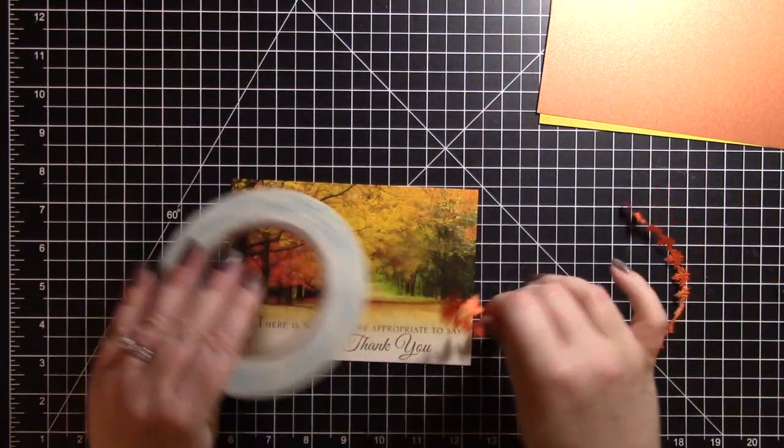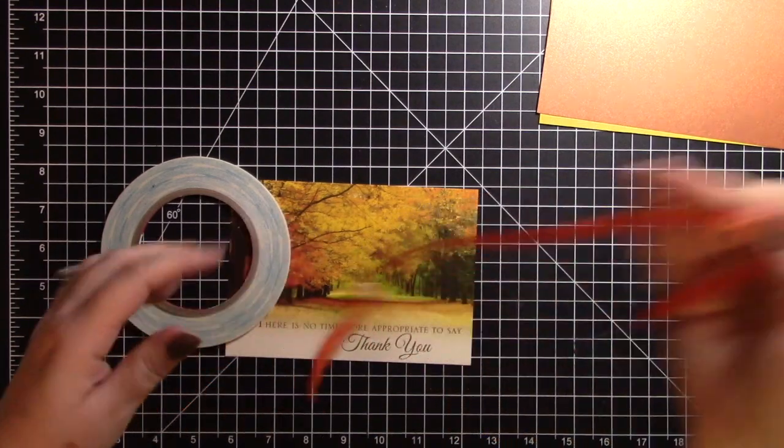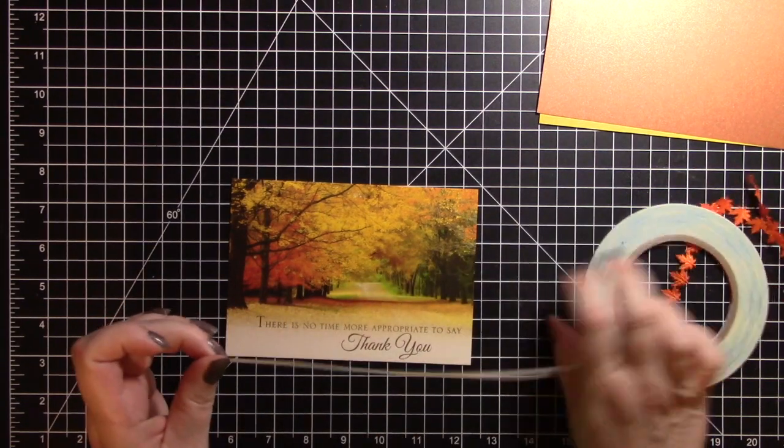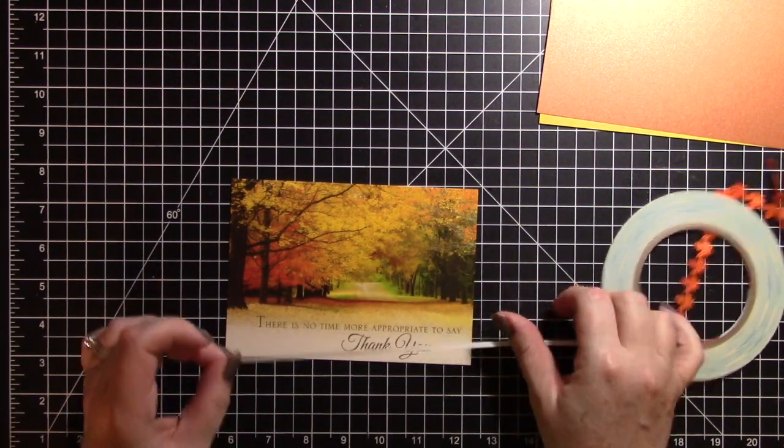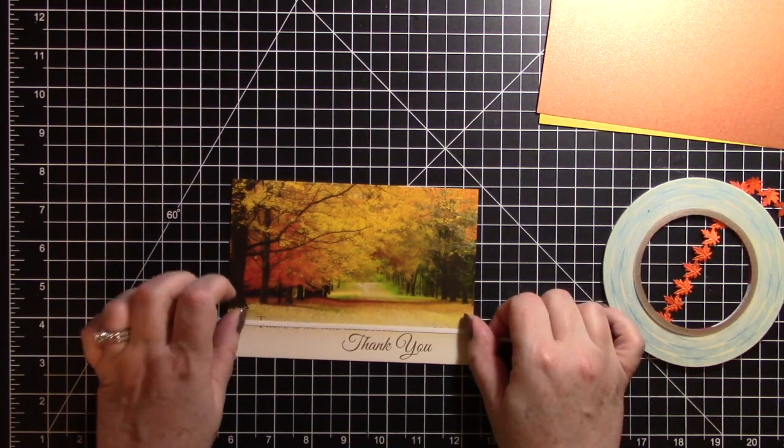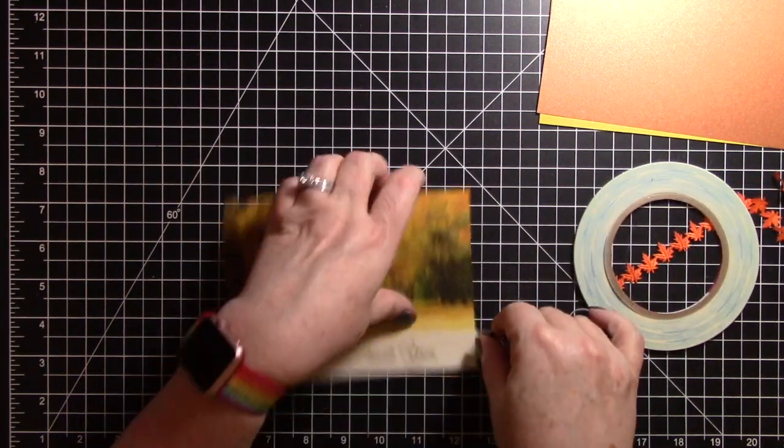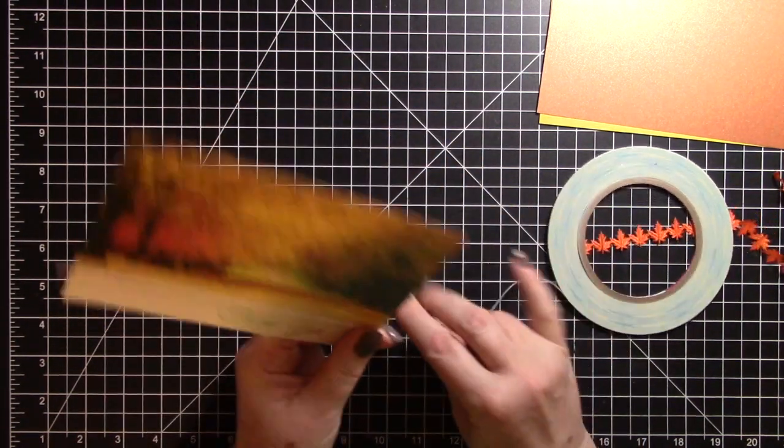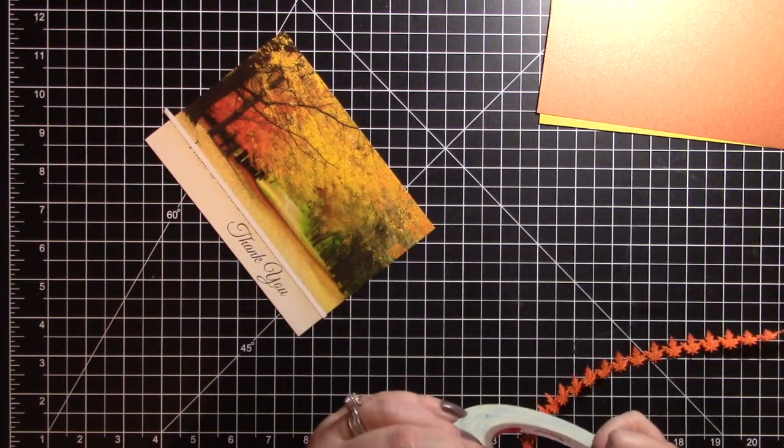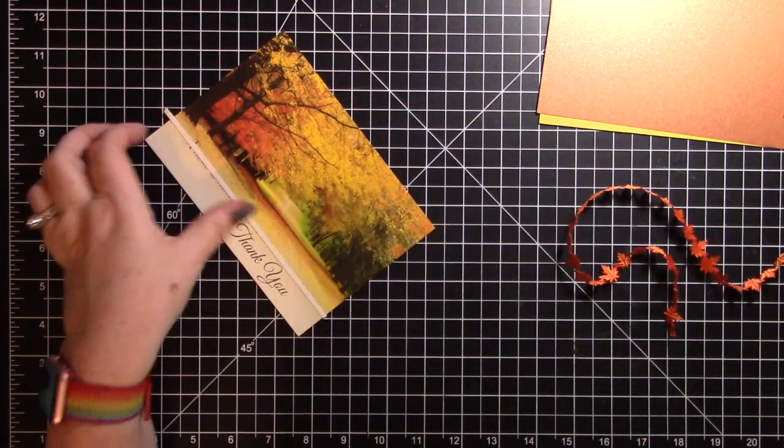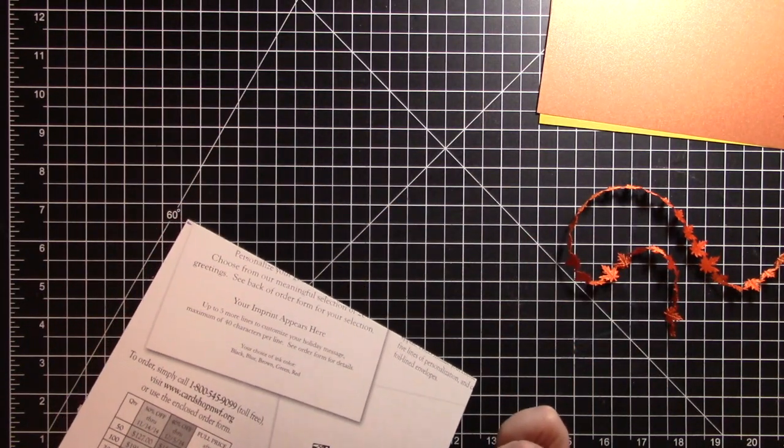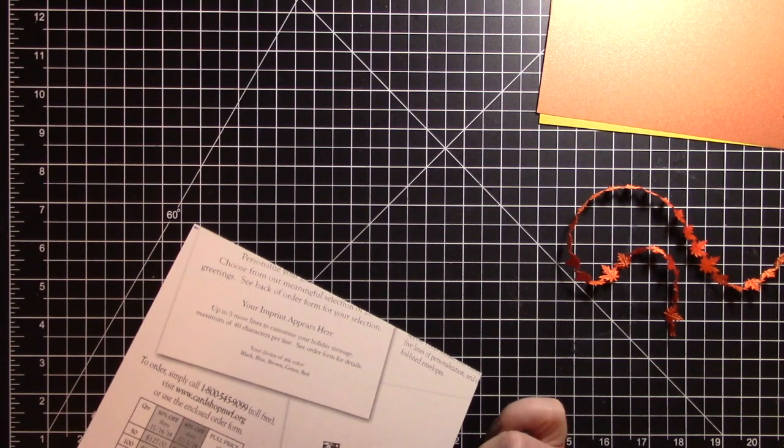So for this since it is rather narrow I'm going to use this score tape, it is an eighth of an inch, and I'm just going to put a piece down right over those words and then I will peel the edging off, the backing I mean.